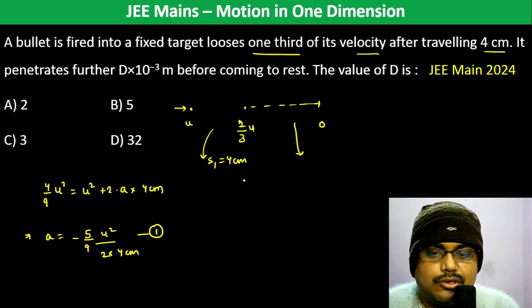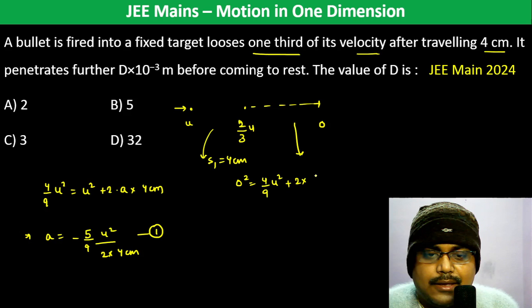Zero squared is equal to 4/9 u² plus 2 into a. This is 5/9 u² by 2 into 9 into 4 centimeters into s1.